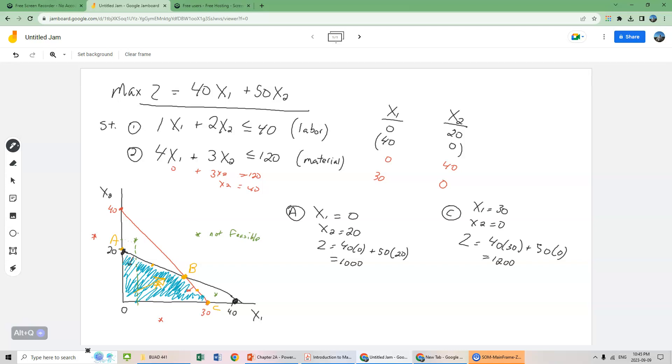So this is basically saying that if we were to move from A to point C, we would increase our profits. So if we were to increase our production of bowls and decrease our production of mugs, we would actually gain more profit.